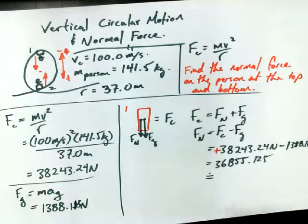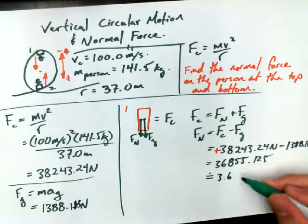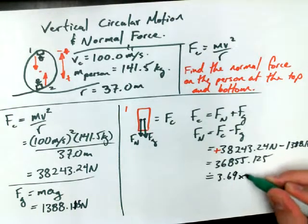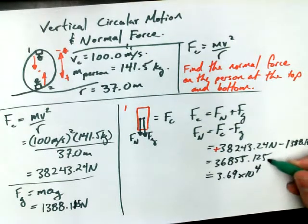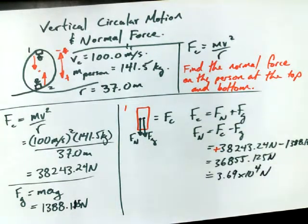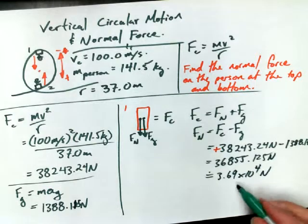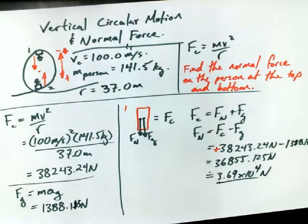Anyway. So, we get our normal force for this first scenario being, with 3 sig figs, 3.69 times 10 to the power of 4 newtons. That would be the normal force at the top.